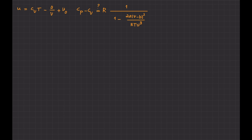I want to use the first law of thermodynamics to solve this problem. The first law of thermodynamics in differential form can be written as dU equals D-prime of Q minus D-prime of W. The reason I put prime there is because dQ and dW are not exact differentials. Assuming a quasi-static process, D-prime of W can be written as P times dV.